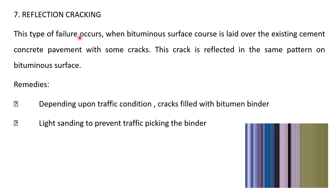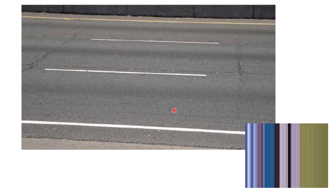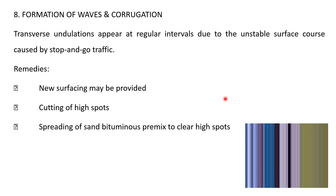Reflection cracking appears when there is a concrete pavement at the bottom with a bitumen layer on top. Whatever cracks or defects occur in the concrete are reflected on the surface of the bitumen layer — those are called reflection cracks. Remedies include filling the cracks and pouring light sand so that the binder is not further affected. You can see cracks in the concrete pavement below the bitumen layer, which is why they get reflected on the surface.